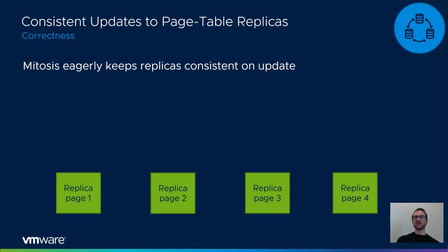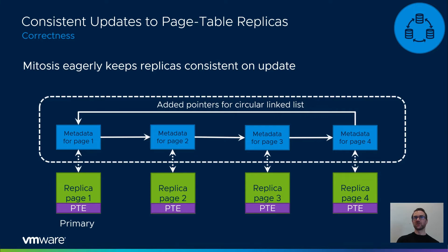Whenever a page table is updated, Mitosis eagerly propagates the updates to the replicas. Linux already ensures mutual exclusion by using locks in the virtual memory subsystem, and it uses the first replica as the primary page table. After the lock has been taken, Mitosis eagerly updates the replicas by propagating the operation applied to the primary replica. After the operation is completed, the lock is released and all replicas are in a consistent state. This process requires a method to efficiently find and locate the replicas in memory. Linux already maintains metadata for each 4KB page of physical memory, which can be efficiently obtained from the page table's physical address. Mitosis uses this data structure to store a pointer to the other replicas, effectively forming a circular list of all the replica page tables. During an update, Mitosis simply follows the pointer to the next replica and applies the update operation.